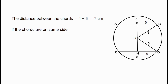When the chords are on the same side of the diameter, the distance between them is OM minus ON. That is equal to 4 minus 3, which equals 1 cm. Thank you.